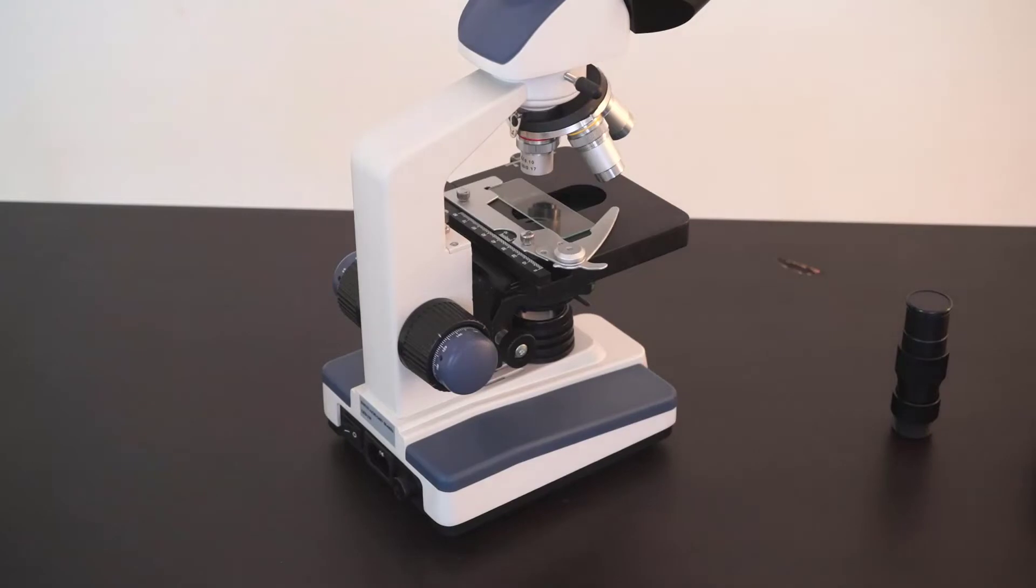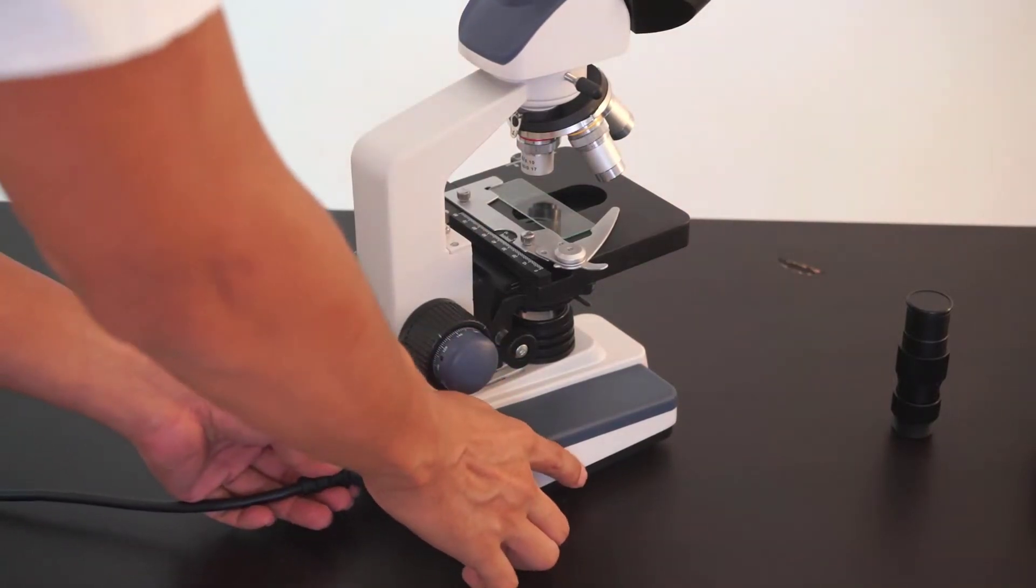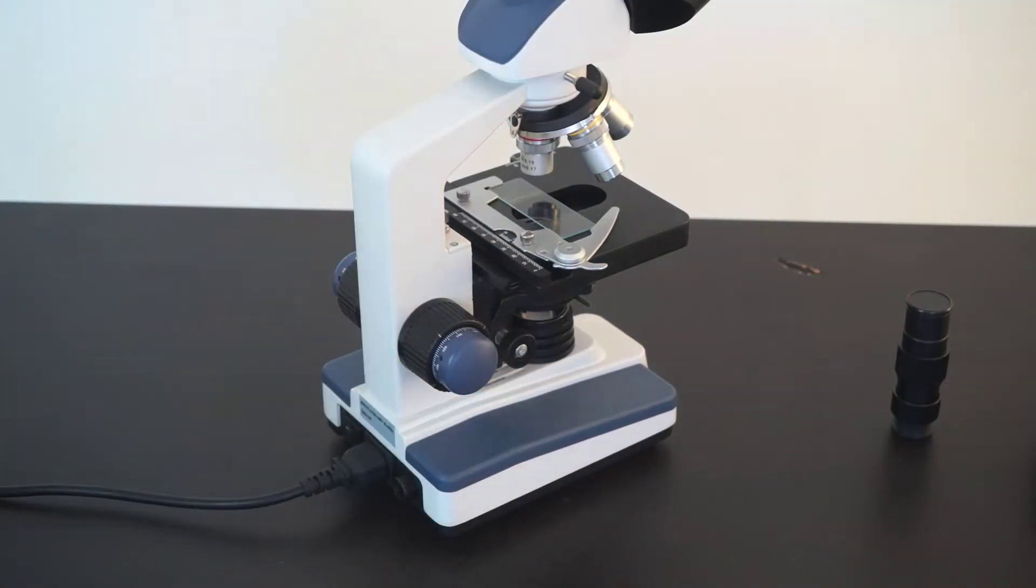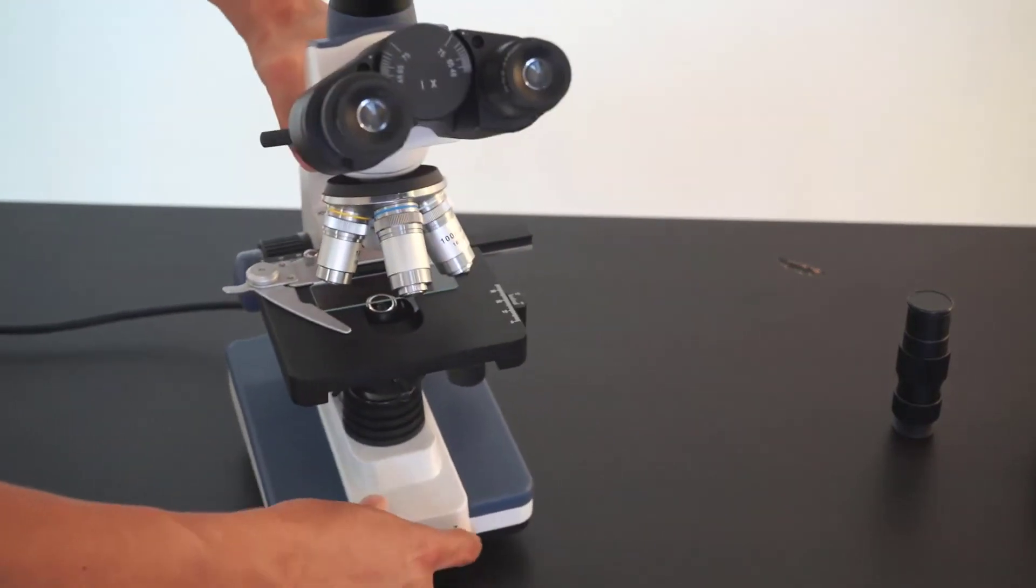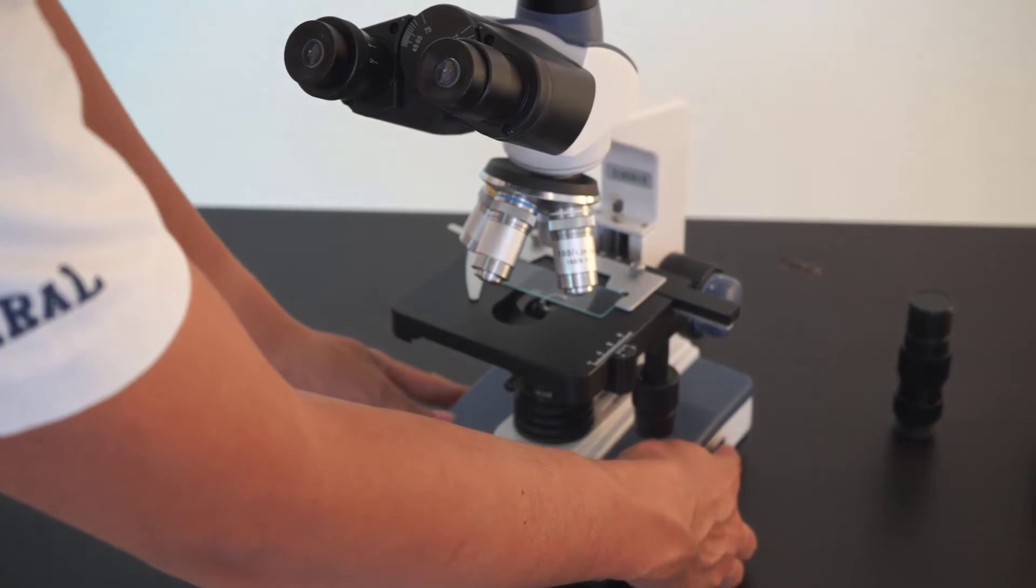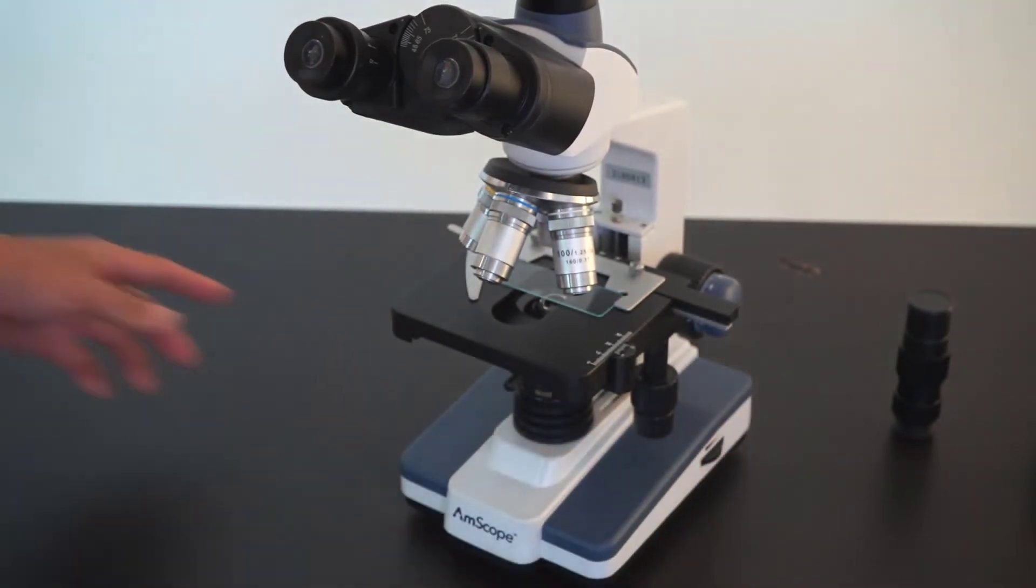To turn on the LED light on the microscope, you can put in the cable and click on the on button. On the side of the microscope there is a knob which you can use to adjust the intensity of the light.